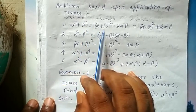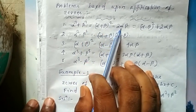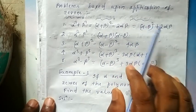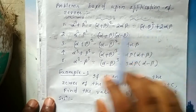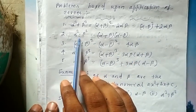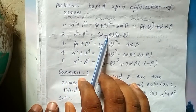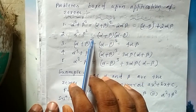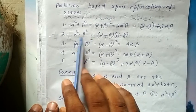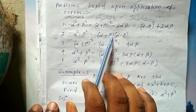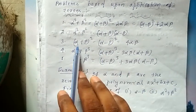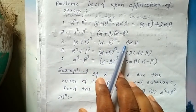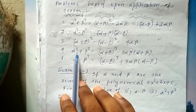α²+β² is equal to (α+β)² minus 2αβ. You can also write it as (α-β)² plus 2αβ. Again, α²-β² is equal to (α+β)(α-β), which is in the form of the a²-b² formula: a²-b² = (a+b)(a-b). Similarly, (α+β)² minus (α-β)² is equal to 4αβ.